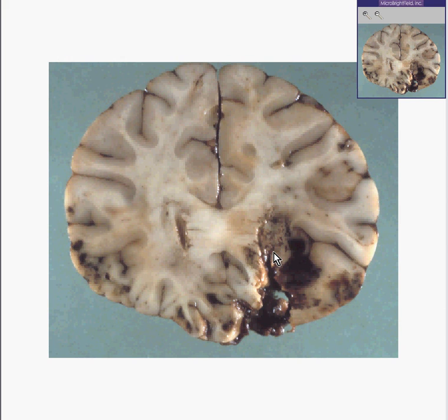We can see that there is hemorrhage. We can see that there is some loss of definition sometimes between gray and white matter. We can imagine that this brain has been contused, like any other part of the body can be contused from simply a blunt trauma.